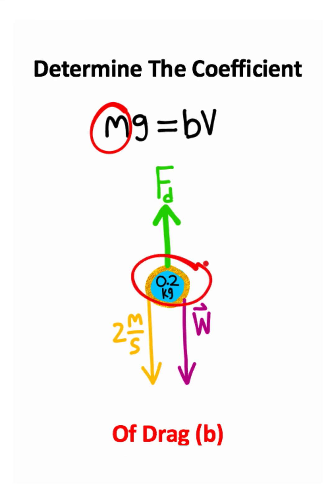Our m is going to be mass, which is 0.2 kilograms. Our g is gravitational acceleration on earth, which is 9.8, we're assuming that we're on earth. And our velocity is going to be the 2 meters per second.